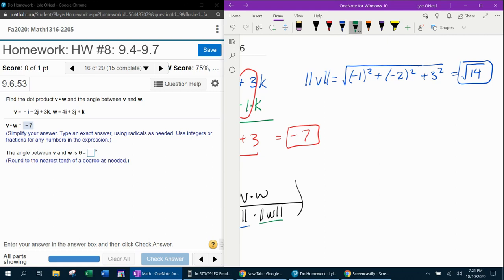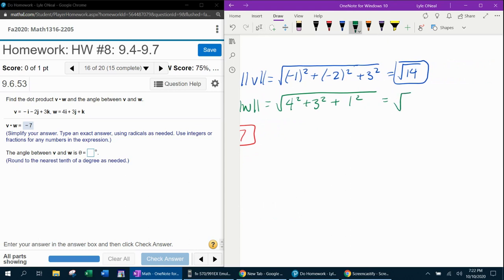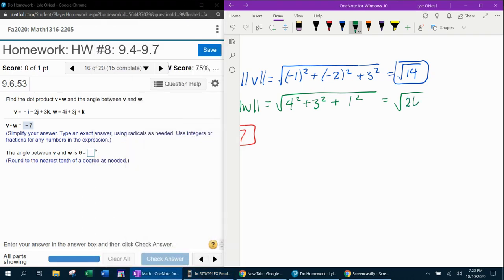Next, I need the magnitude of W. And that's going to be the square root of 4 squared plus 3 squared plus 1 squared. And again, I'm going to use my calculator just to make sure. Square root of 4 squared plus 3 squared plus 1 squared. Square root of 26 in simplest radical form.